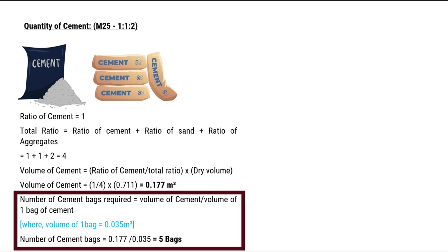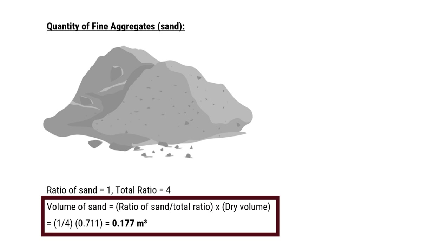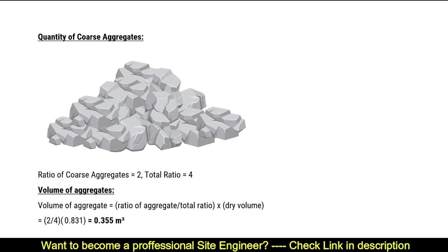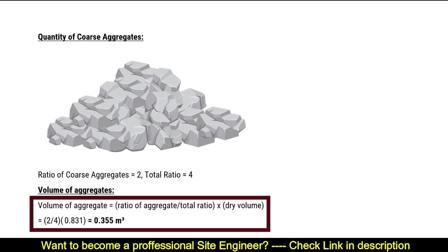The volume of one bag is equal to 0.035 cubic meters. Volume of sand is given by ratio of sand upon total ratio, multiplied by dry volume, which gives us 0.177 cubic meters. Volume of coarse aggregates is given by ratio of aggregates upon total ratio, multiplied by dry volume, which gives us 0.355 cubic meters.